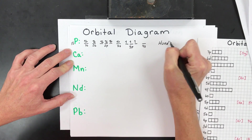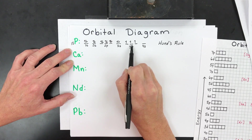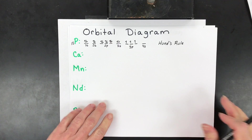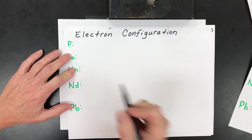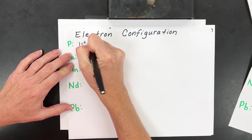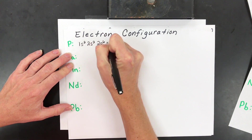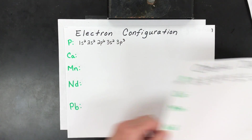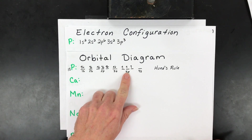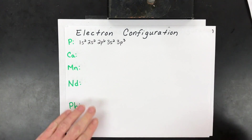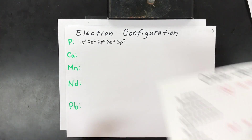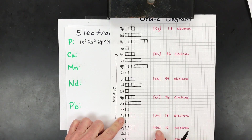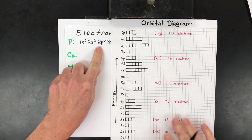Remember Hund's rule — we unpairing electrons when they're at an equal energy sub-level, which is the 3p. The full electron configuration is 1s² 2s² 2p⁶ 3s² 3p³, because there were three electrons in that last orbital. The shortened version uses neon, since we're not quite to argon, covering the first portion and leaving 3s² 3p³.